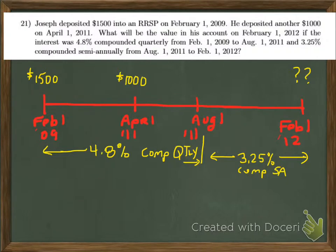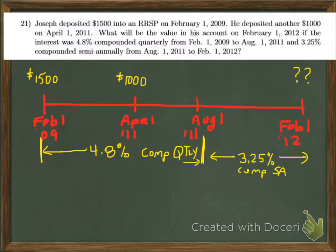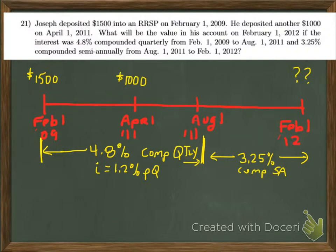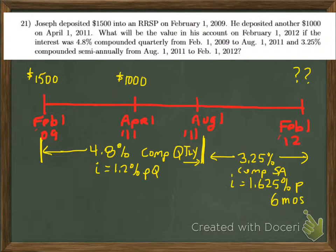The interest is 4.8% compounded quarterly from February 1, 2009 to August 1, 2011 — I've got that period identified on the timeline. That nominal rate compounded quarterly works out to 1.2% per quarter (4.8 divided by 4). Then from August 1, 2011 to February 1, 2012, the rate is 3.25% compounded semi-annually, which boils down to 1.625% per six-month period.